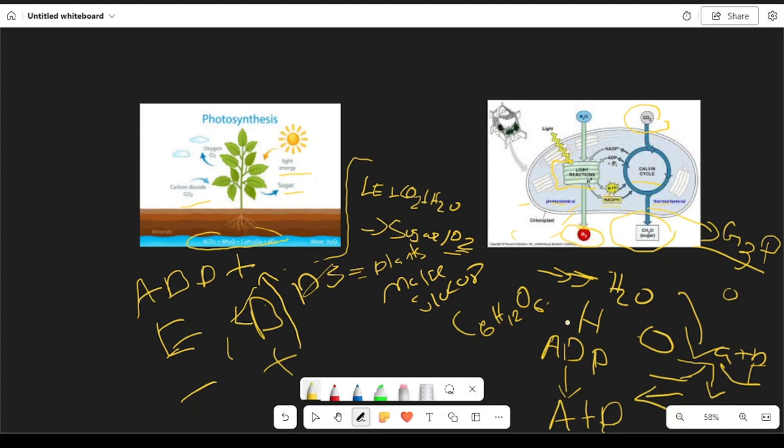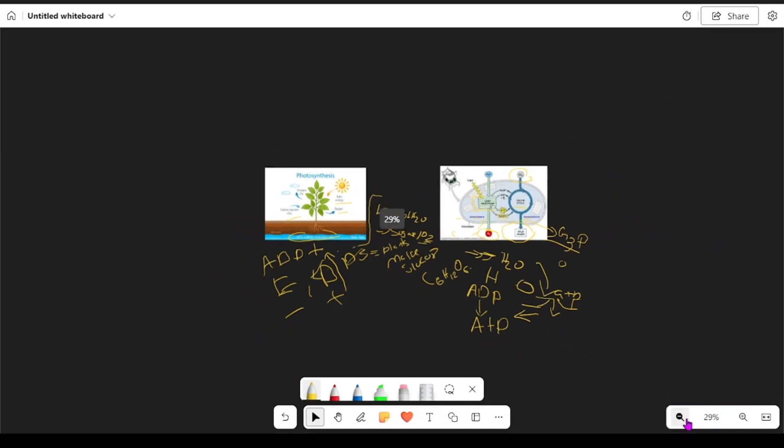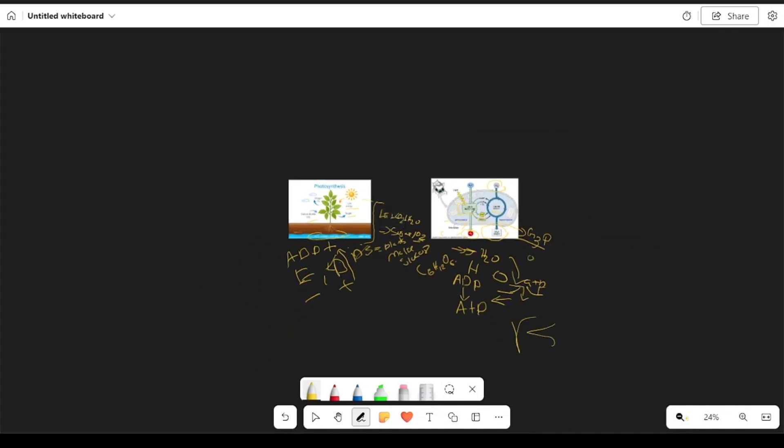Now I'll just move to the key points of the video to finalize everything. Starting with the basics: light energy from the sun gets combined with water (H2O), which gets combined with carbon dioxide to form glucose.